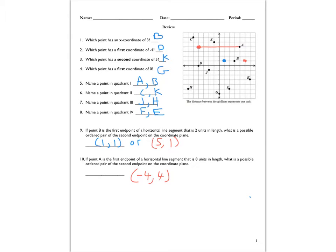Check out these answers and see how you did for questions 5, 6, 7, and 8. I put both possible answers — you only had to name one point, but these are the possible answers for those. Keep in mind that a coordinate is made up of two numbers: the x-coordinate and the y-coordinate, also referred to as the first and second coordinate. If you got any of these wrong and aren't sure why, let me know and I can come over and help you.